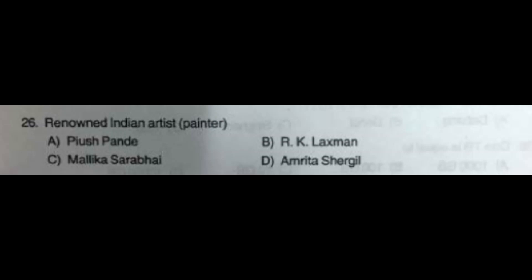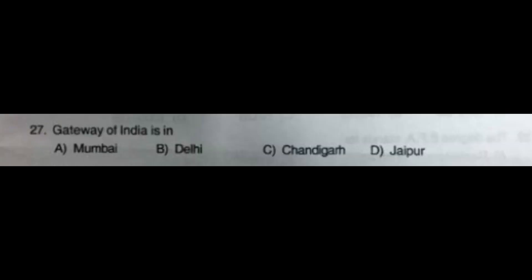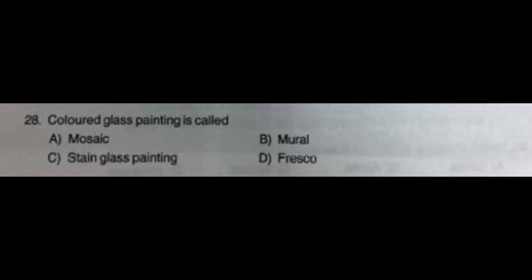Question number 27: Gateway of India is in — option A: Mumbai, option B: Delhi, option C: Chandigarh, option D: Jaipur. The correct answer is option A: Mumbai. Question number 28: Colored glass painting is called — option A: Mosaic, option B: Mural, option C: Stained Glass Painting, option D: Fresco. The correct answer is option C: Stained Glass Painting.